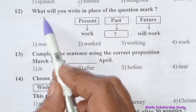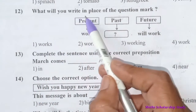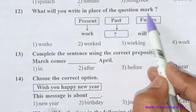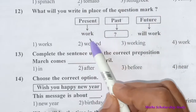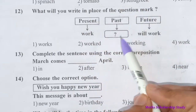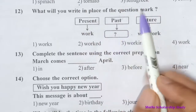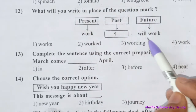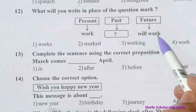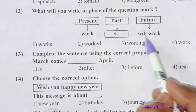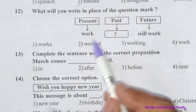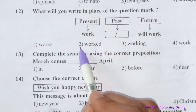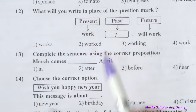Question number twelve: What will you write in place of the question mark? Present: work; Past: ?; Future: will work. Work — worked — will work. The correct option is 'worked'. Option number two.